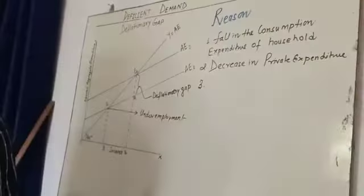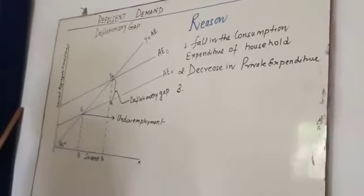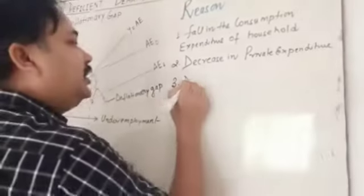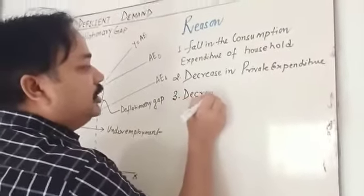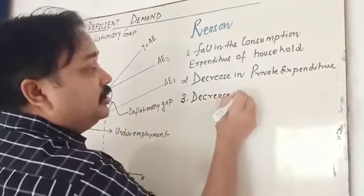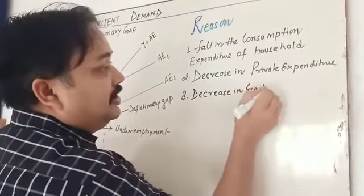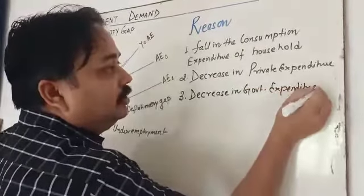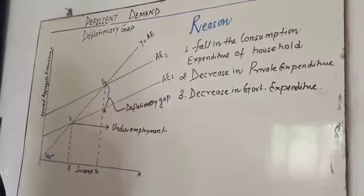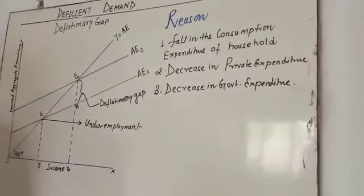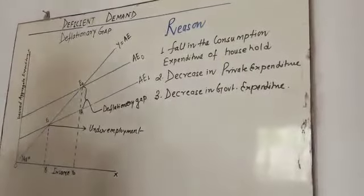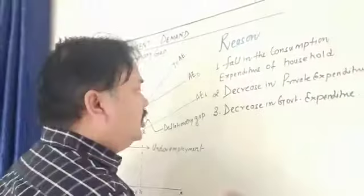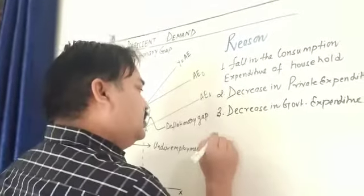Third is regarding the government — decrease in government expenditure. Government expenditure is not going to be matched with the corresponding decrease in taxes.